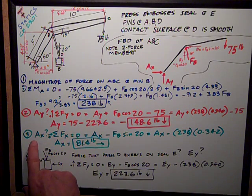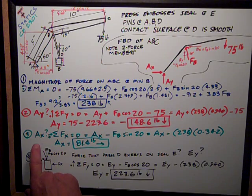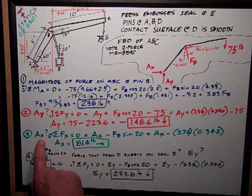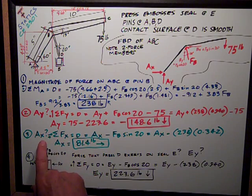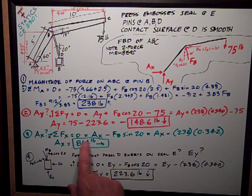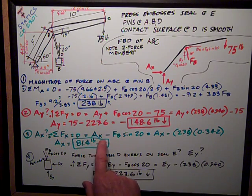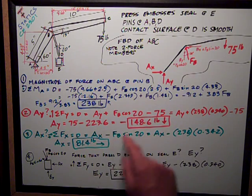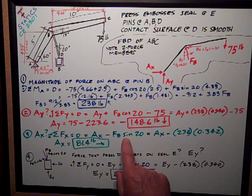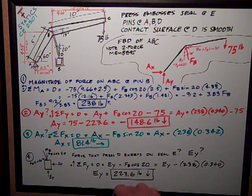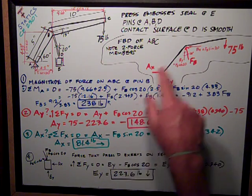Number three, what's the horizontal force at A? AX, sum of forces in the X direction, positive to the right, is zero, is equal to AX, minus BX, which is also FB, times the sine of 20. And that's all I have in the X direction, those two forces.